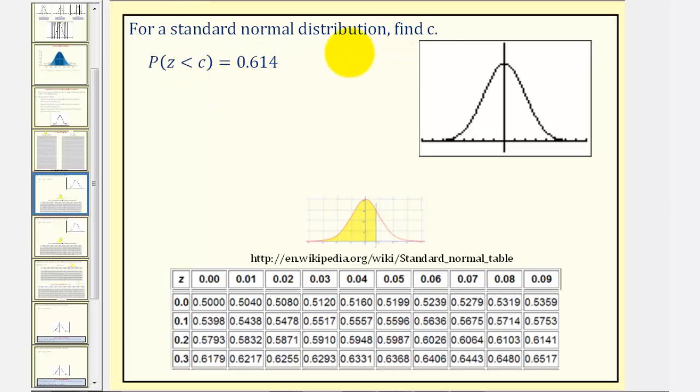For a standard normal distribution, we want to find C such that the probability of Z being less than C is equal to 0.614.